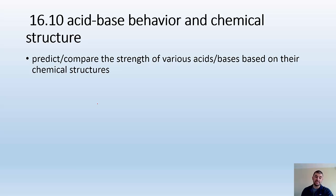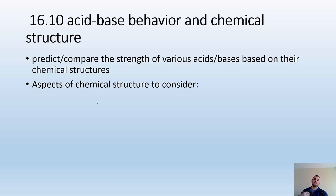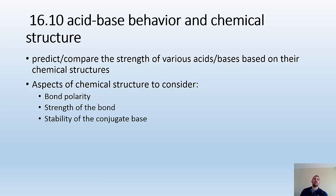Our objectives are to predict and compare the strengths of various acids and bases based on their chemical structures. We're going to look at these things and be able to tell which one's more acidic. Aspects of chemical structure to consider are going to be bond polarity, strength of the bond, and stability of the conjugate base.